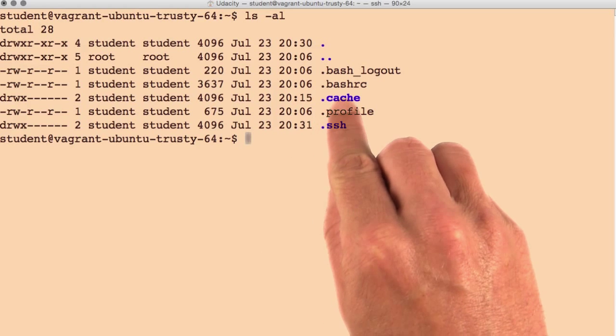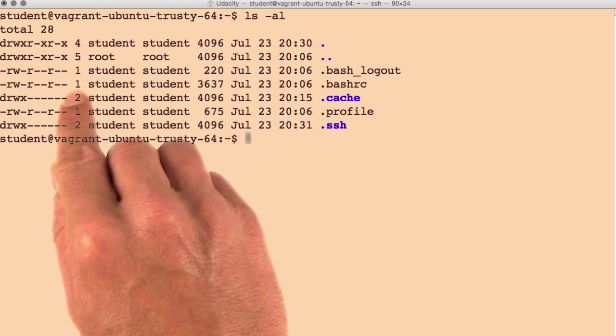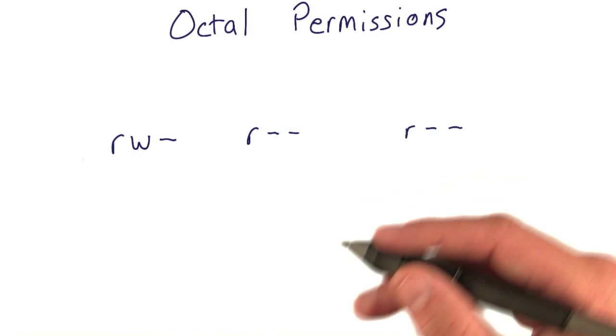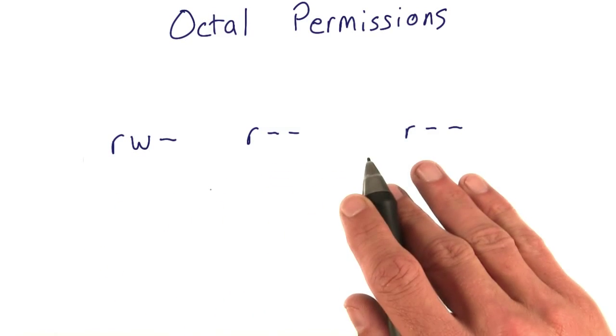Let's analyze our student's bashrc file once again, and convert its current permissions into octal form. The current permissions for this file are rw dash, r dash dash, and r dash dash.